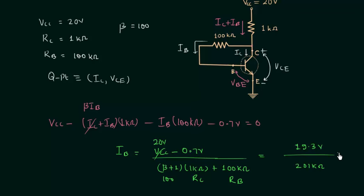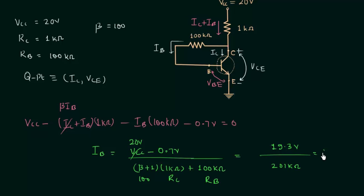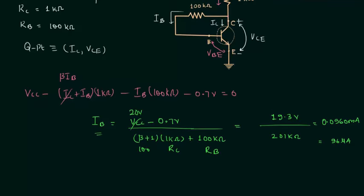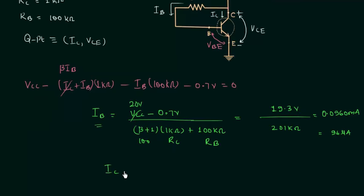After solving, the value of base current IB is equal to 0.096 milliamps, or we can write IB equal to 96 microamps. Now we can easily calculate the collector current. IC equals beta times IB. Beta is equal to 100, so IC equals 100 times 96 microamps, giving IC equal to 9.6 milliamps.